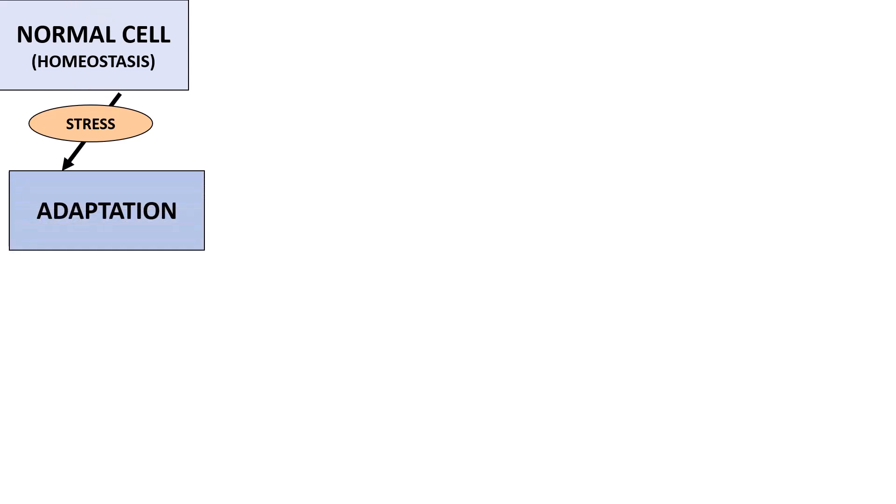First and foremost, before we learn about cellular adaptations, let's get the concepts right. We should understand that all the cells in our body will be in the state of homeostasis — the constancy of the internal environment is maintained. And when such cells are exposed to some kind of stress or abnormality, these cells try to adapt to these new abnormal conditions, and that's called cellular adaptation.